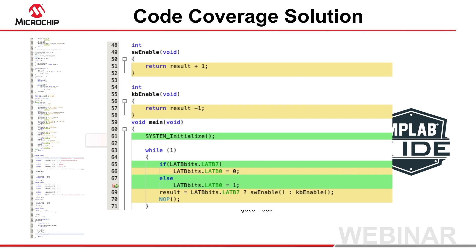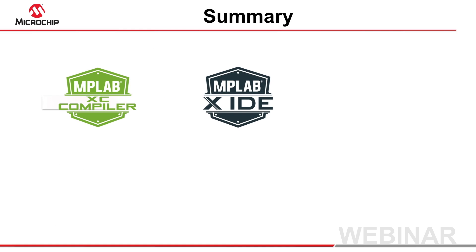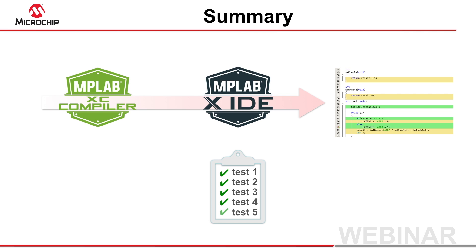It also shows lines that were not covered, which might, for example, indicate that the code did not produce any executable code. Code coverage information, like that produced and displayed by Microchip's compiler and IDE tools, is important for anyone wanting to produce reliable code. With it, you can find efficiencies in your testing and validate the testing you do perform by confirming that all parts of your code have been executed during your test regime.